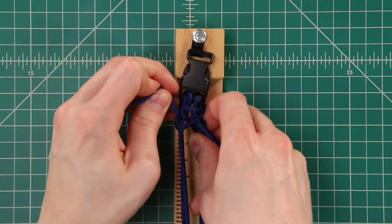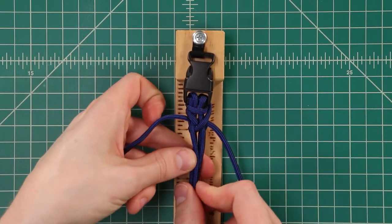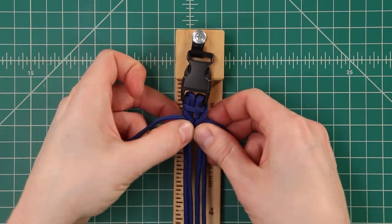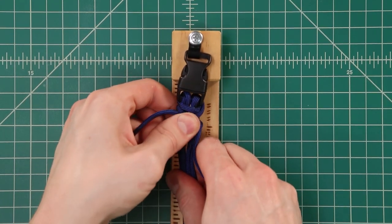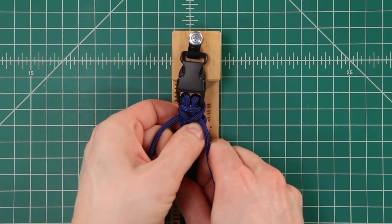You want to be careful to not over tighten these otherwise your four cords are just going to get all bundled up in the middle. You want them to stay flat. So it's more important that you push them up towards the top than that you get them absolutely tight.